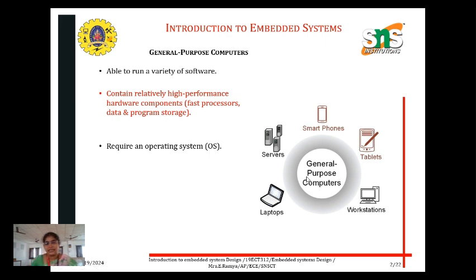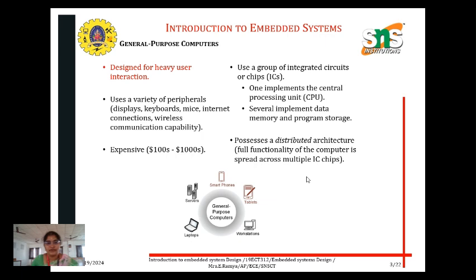Before going to the introduction of embedded systems, we have to know how general purpose computers work. It is designed for heavy user interaction, using a variety of peripherals like displays, keyboards, mouse, internet connections, and wireless communication capability. General purpose computers are expensive, costing around $100 to $1000. They use a group of integrated circuits (ICs) — one implements the CPU, and several implement data memory and program storage, including RAM and ROM, primary memory and secondary memory.